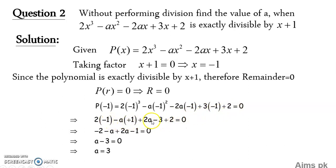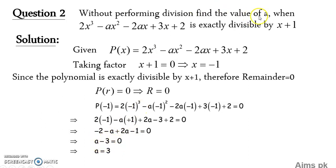We equated our polynomial to 0 because since the polynomial is exactly divisible by (x plus 1), its remainder must equal 0. After adding and subtracting the like terms — the two 'a' terms combine with the sign of the larger quantity giving just 'a' — and minus 2 minus 1 gives minus 3, so we have a minus 3 equals 0. Shifting minus 3 to the other side, the value of a equals 3. This is our required answer.